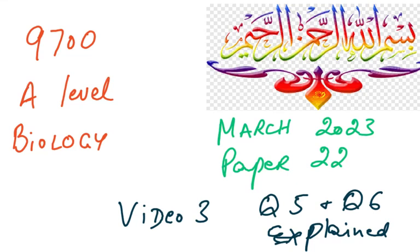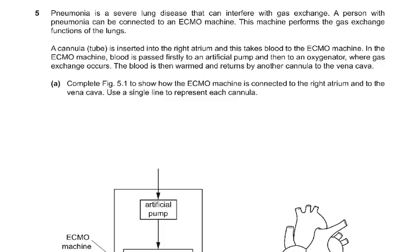This is video 3 on the March 23 Paper 2.2, covering questions 5 and 6 explained. Starting with question number 5: Pneumonia is a severe lung disease that can interfere with gas exchange. A person with pneumonia can be connected to an ECMO machine, which performs the gas exchange function of the lungs.